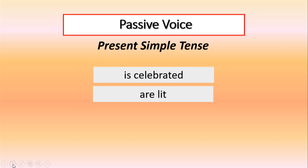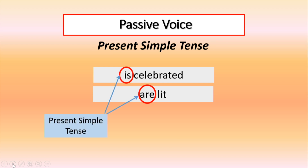How do we know? There are the verbs is and are before the main verb, and these verbs are in the present simple tense.